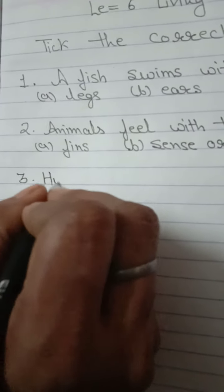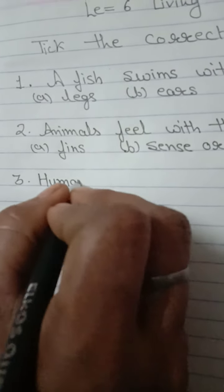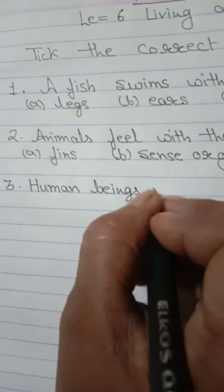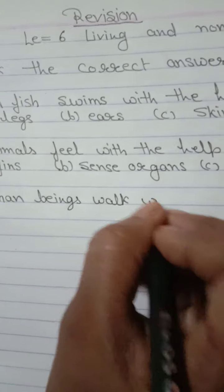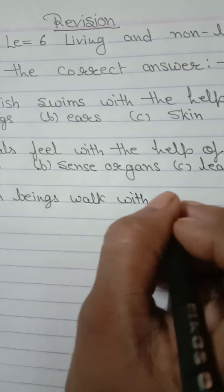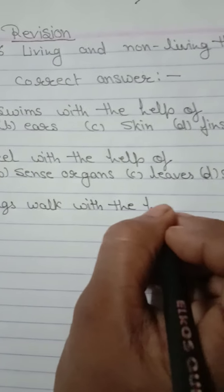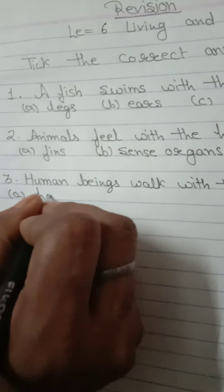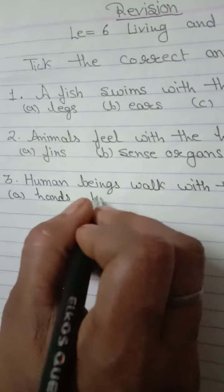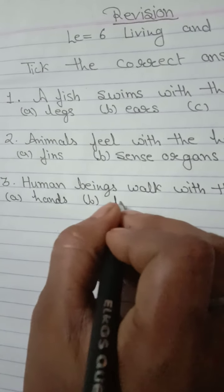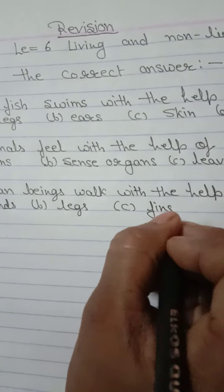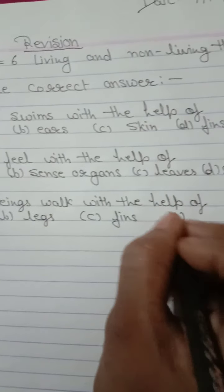Third, human beings walk with the help of. Option A, hand, you know very well, B, legs, C, fins, and D, wings.